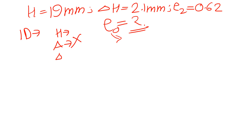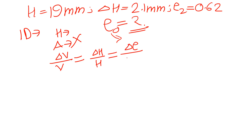We can write: ΔV/V = ΔH/H, since area is constant. This is also equal to Δe / (1 + e), where Δe is the change in void ratio and e is the initial void ratio. Substituting: ΔH = 2.1 mm and H = 19 mm.